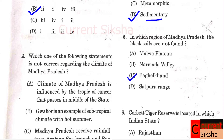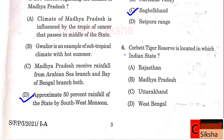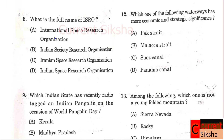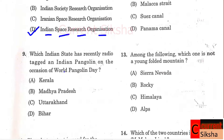Question 5: In which region of Madhya Pradesh are black soils not found? Correct option C - Baghelkhand. Question 6: Corvette Tiger Reserve is located in which Indian state? Correct option B - Madhya Pradesh. Question 7: When was the World Health Organization established? Correct option C - 7th April 1948. Question 8: What is the full name of ISRO? Correct option D - Indian Space Research Organization. Question 9: Which Indian state has recently radio-tagged an Indian Pangolin on the occasion of World Pangolin Day? Correct option B.